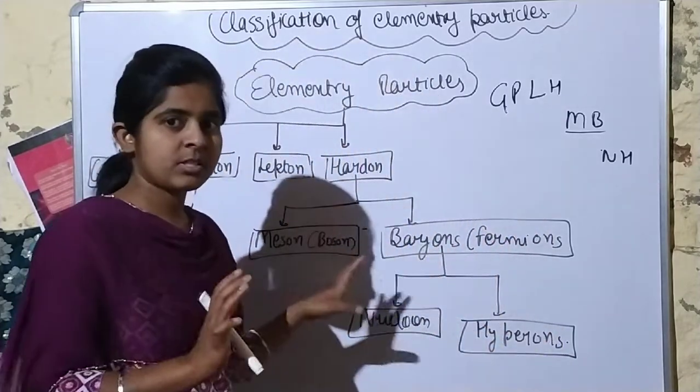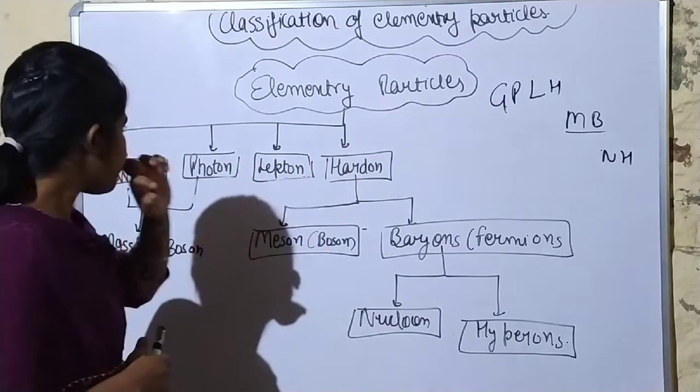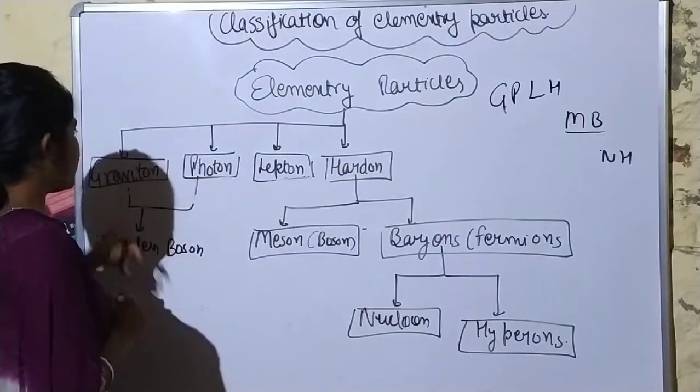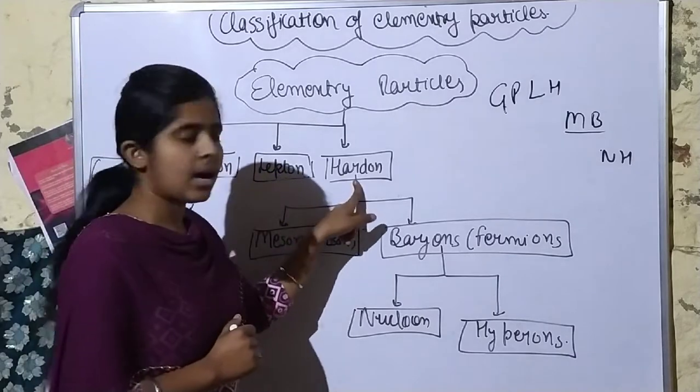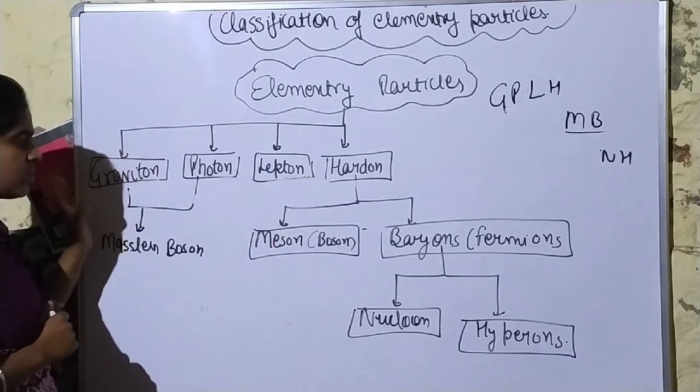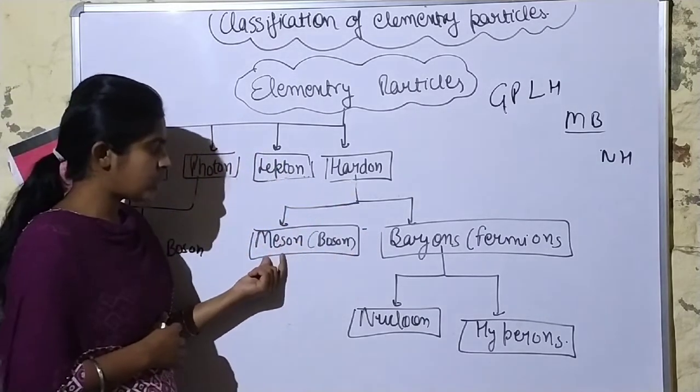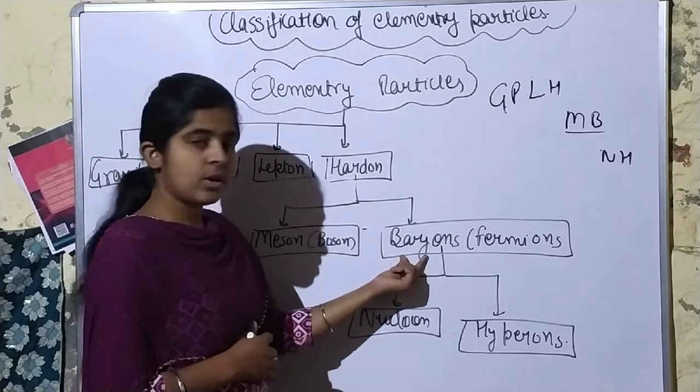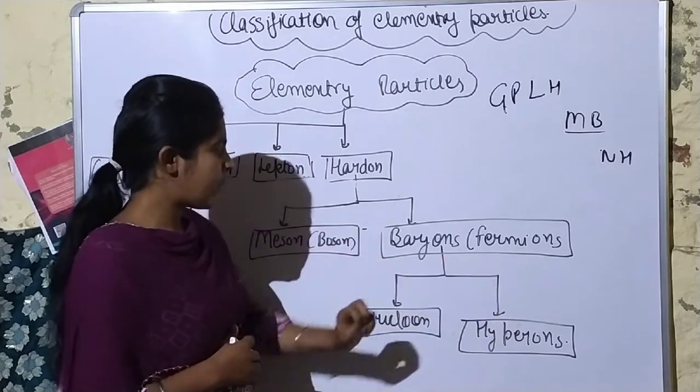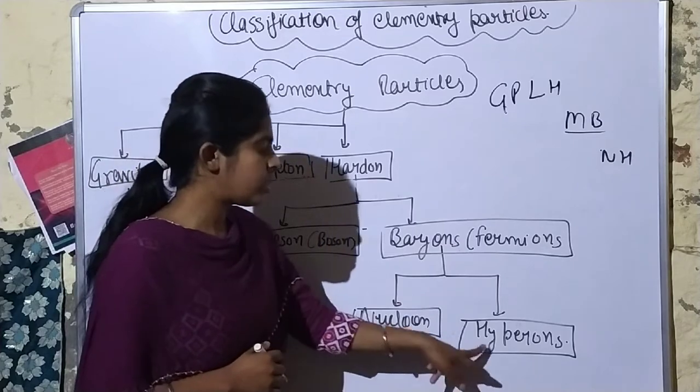Today we have learned that elementary particles we have to categorize into types: graviton, photon, lepton and hadron. These are mass-less bosons which are in the category of bosons. Then there are two types: mesons and baryons, and nucleons and hyperons.